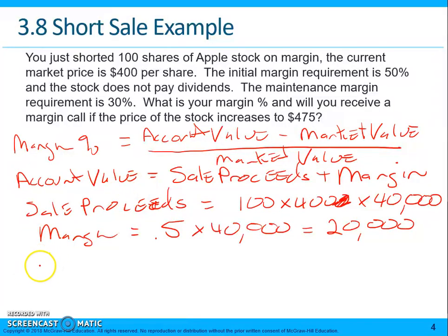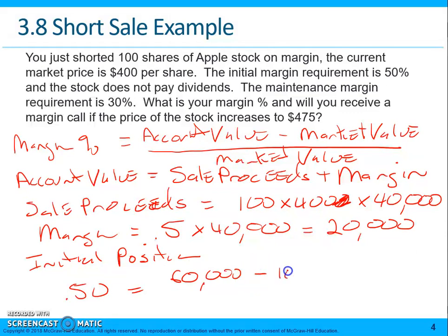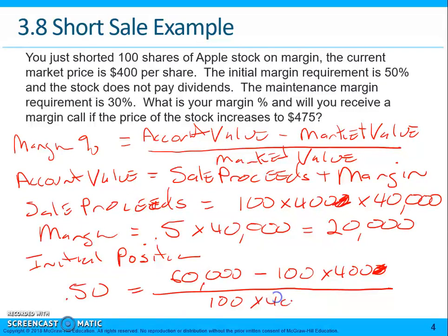So your initial position: margin equals 0.5, which is equal to $60,000 minus 100 times $400, divided by 100 times $400. That confirms the 50% initial margin.